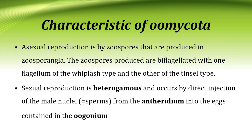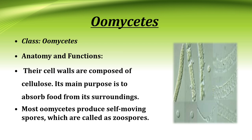Characteristics of Oomycota: asexual reproduction is by zoospores that are produced in zoosporangia. The zoospores produced are biflagellated, with one flagellum of the whiplash type and the other of the tinsel type. Sexual reproduction is heterogamous and occurs by direct injection of male nuclei from the antheridium into the eggs contained in the oogonium.